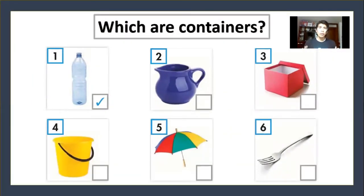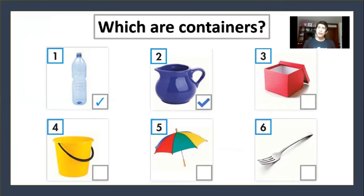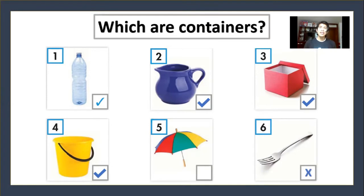Now we are going to think about which are containers. A bottle — is it a container? Yes, it is. Number two, is a jar a container? Yes, it is. Number three, is a box a container? Yes, it is. Number four, is a bucket a container? Yes, it is. Is an umbrella a container? No, it isn't. And the fork? No, it isn't.